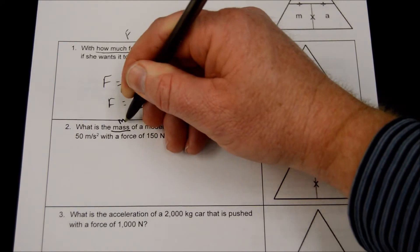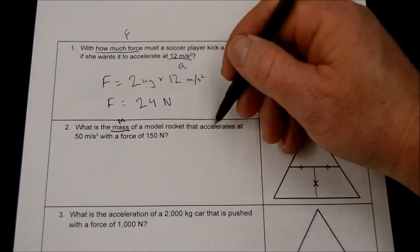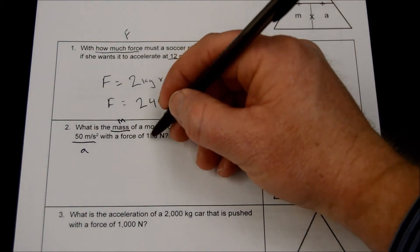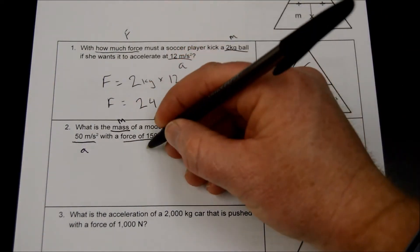Mass we don't know. Our acceleration is 50 meters per second squared, so that's our A, and then it says right here our force is 150 newtons. That's our F.